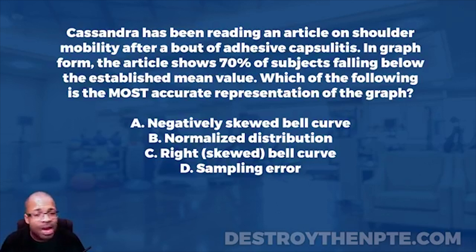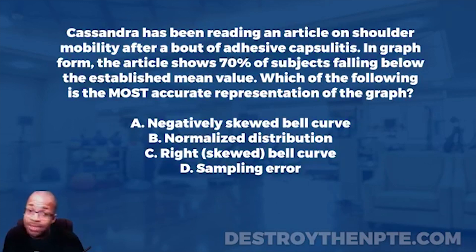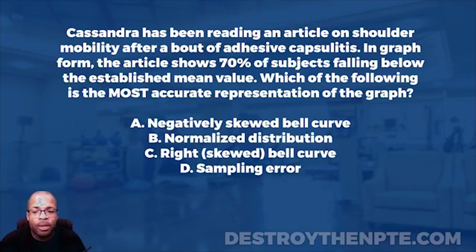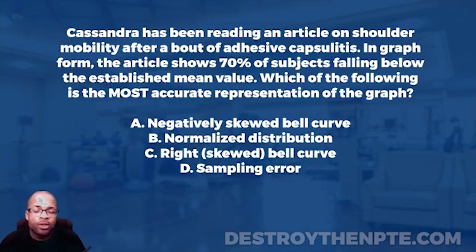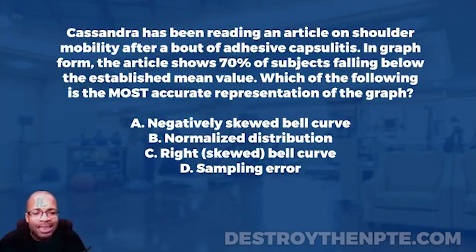On the NPTE, research doesn't count for very much — maybe three to four questions — but sometimes it comes down to the wire and those questions could make you or break you. When you're looking at research on the NPTE, bell curve is one of those things you really need to understand well. There are a bunch of questions that can come from it and it's a pretty hot target.